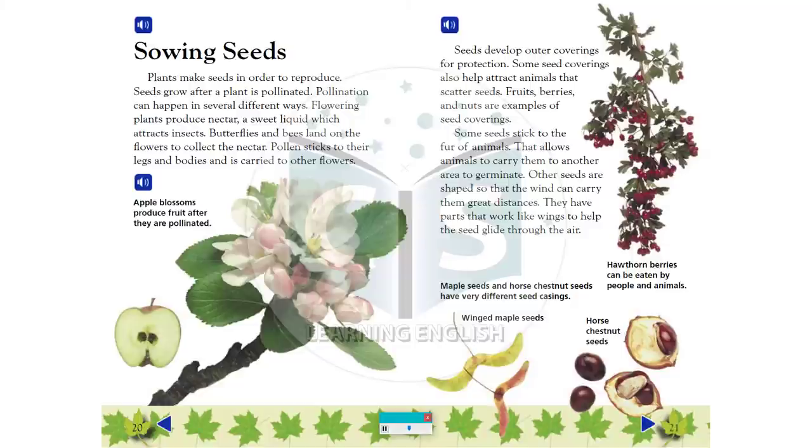Some seeds stick to the fur of animals. That allows animals to carry them to another area to germinate. Other seeds are shaped so that the wind can carry them great distances. They have parts that work like wings to help the seed glide through the air.